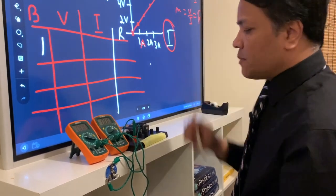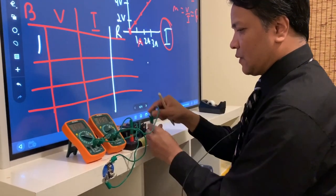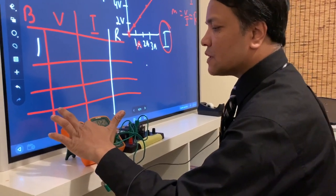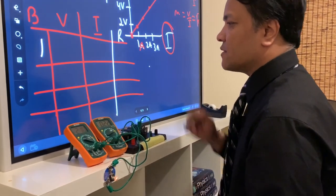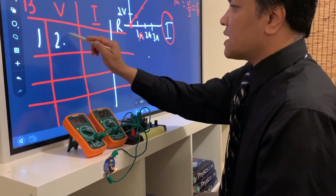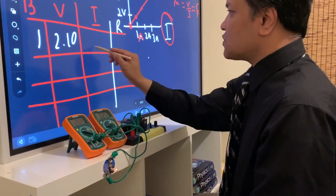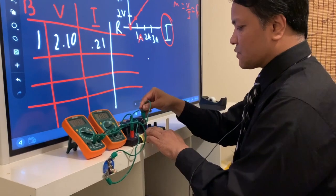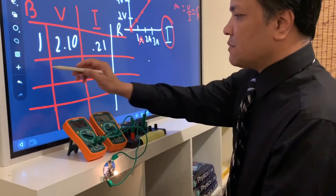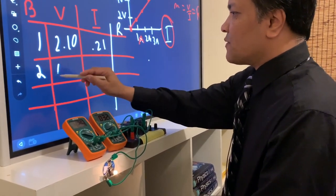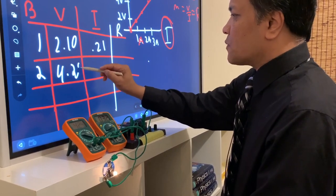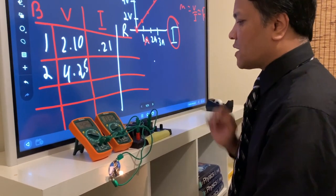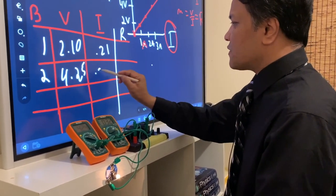So one battery gives us how much voltage? About 2.10 volts. And the current is 0.21. And now 2 batteries. So now we're going to put 2 batteries, 4.25 volts, and the current is 0.32.